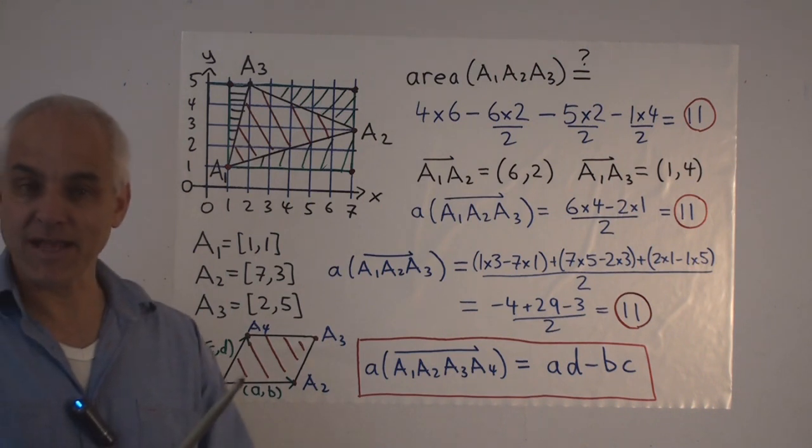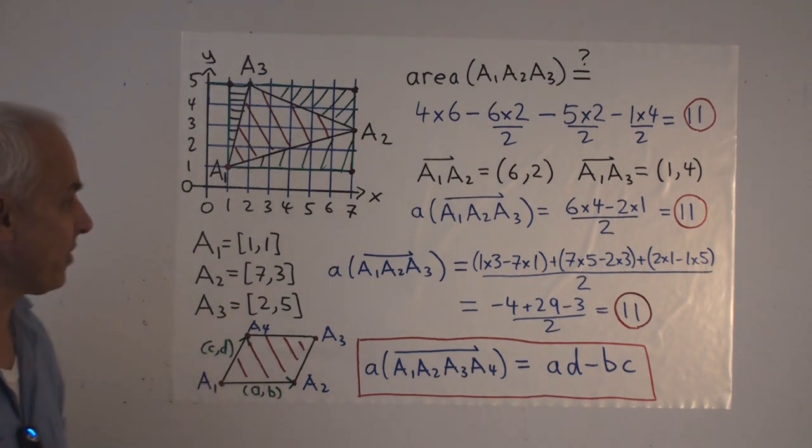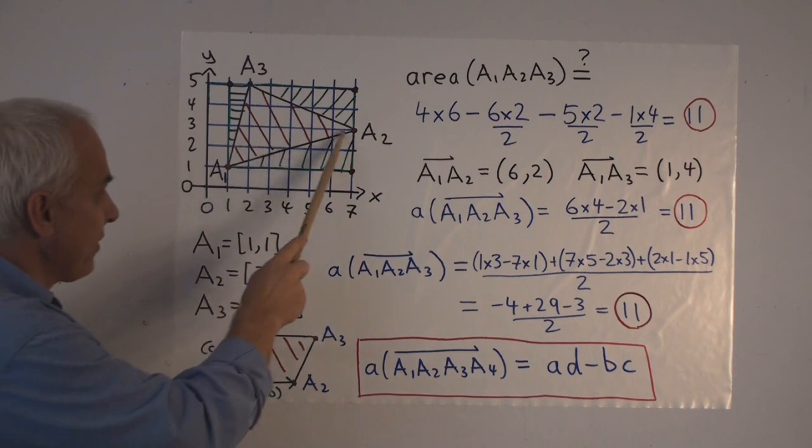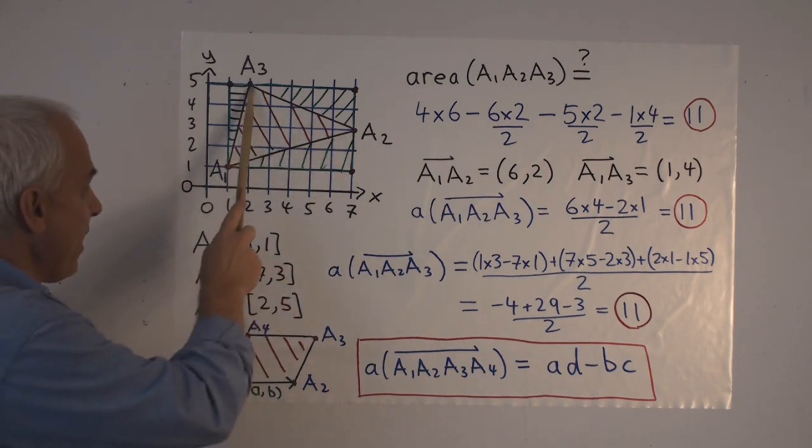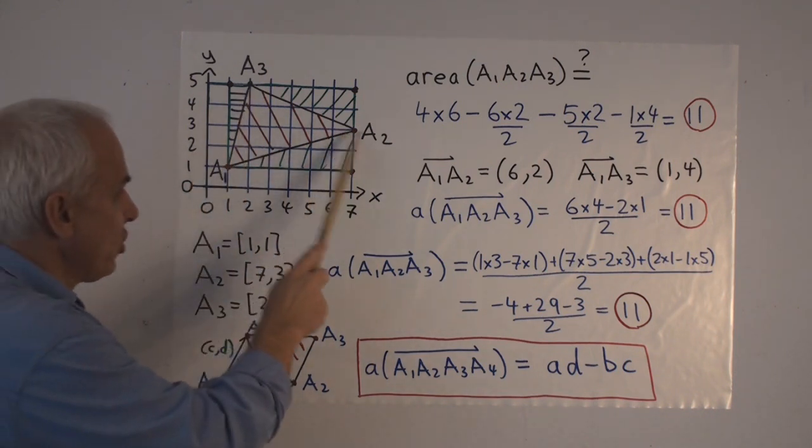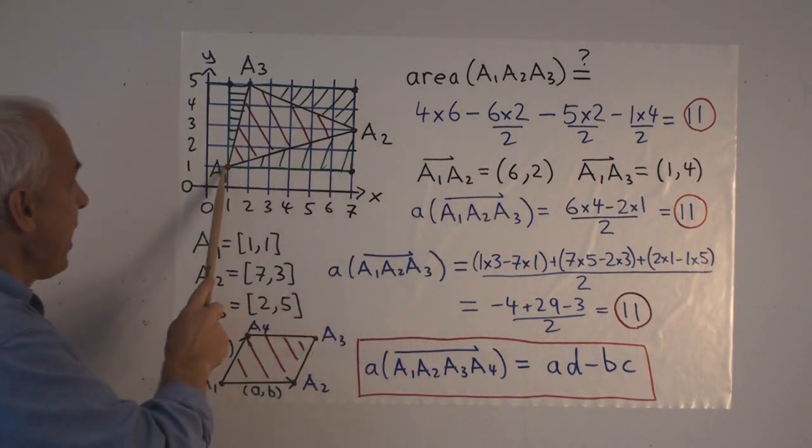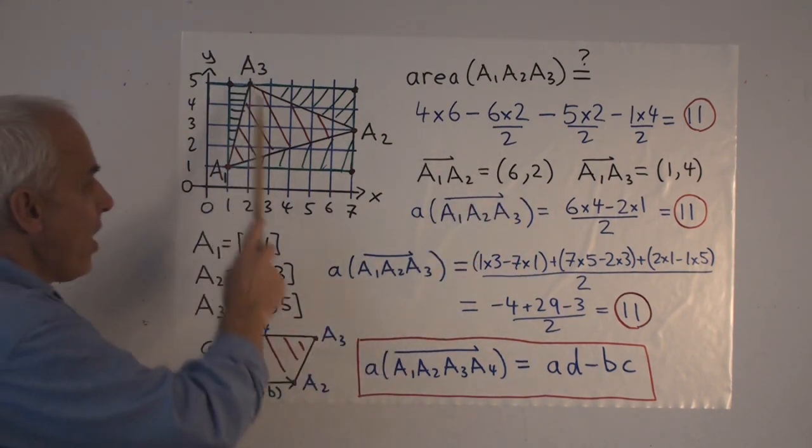Now let's have a look at that signed area definition. So we'll start with A1. We'll emanate from here, getting that vector and that vector. A1, A2 is the vector 6, 2. A1, A3 is the vector 1, 4.